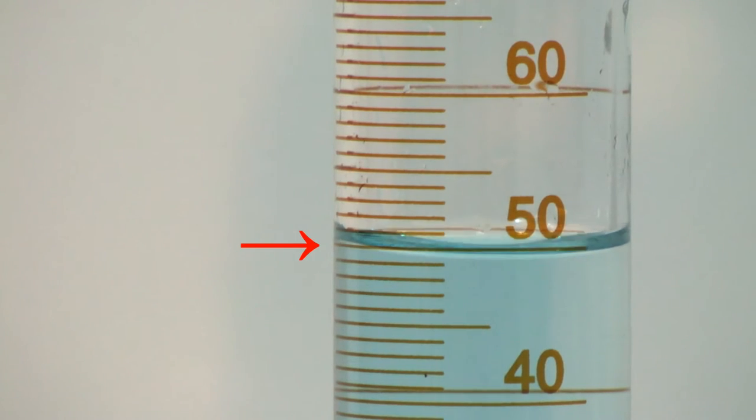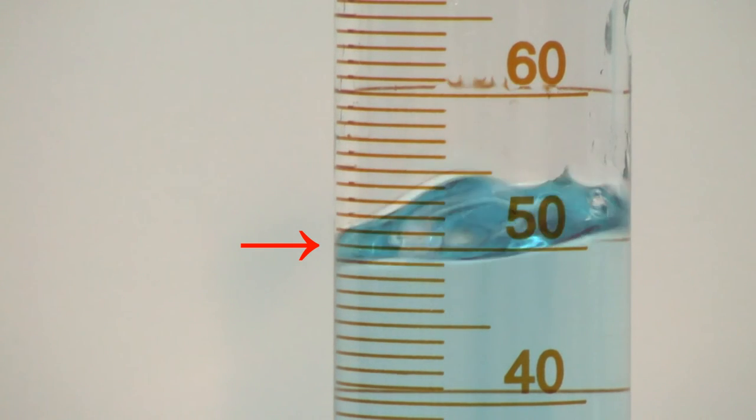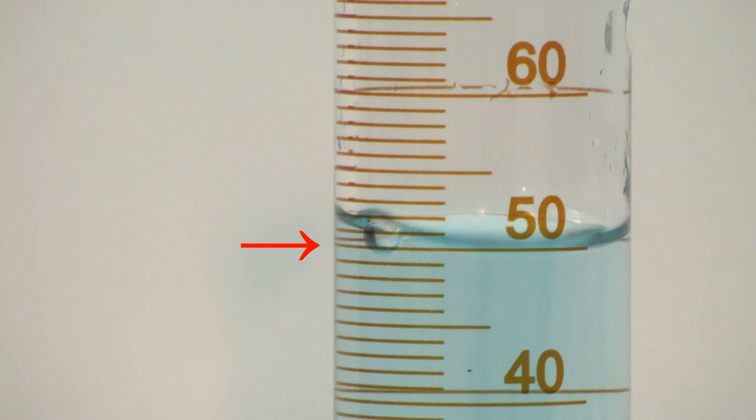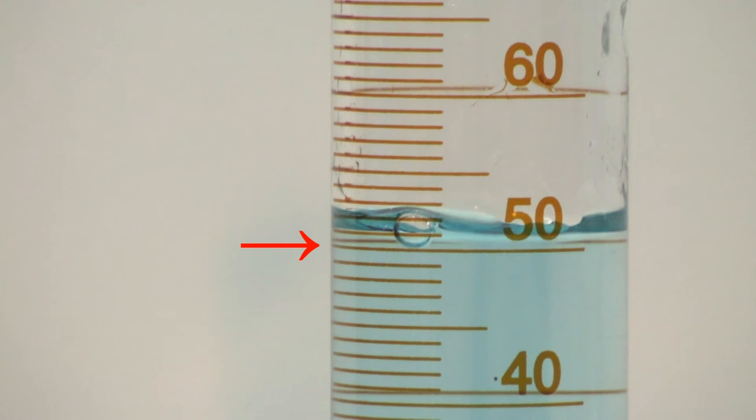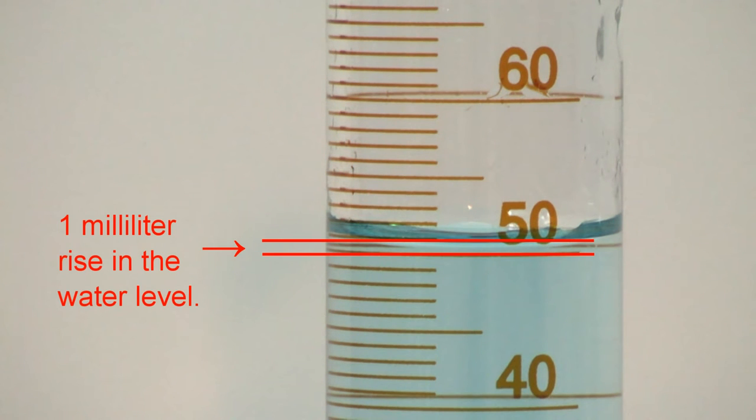Watch the change in the water level. The red arrow shows you where the bottom of the meniscus was before we added the red one cubic centimeter block. Note that the water level has risen exactly one milliliter.